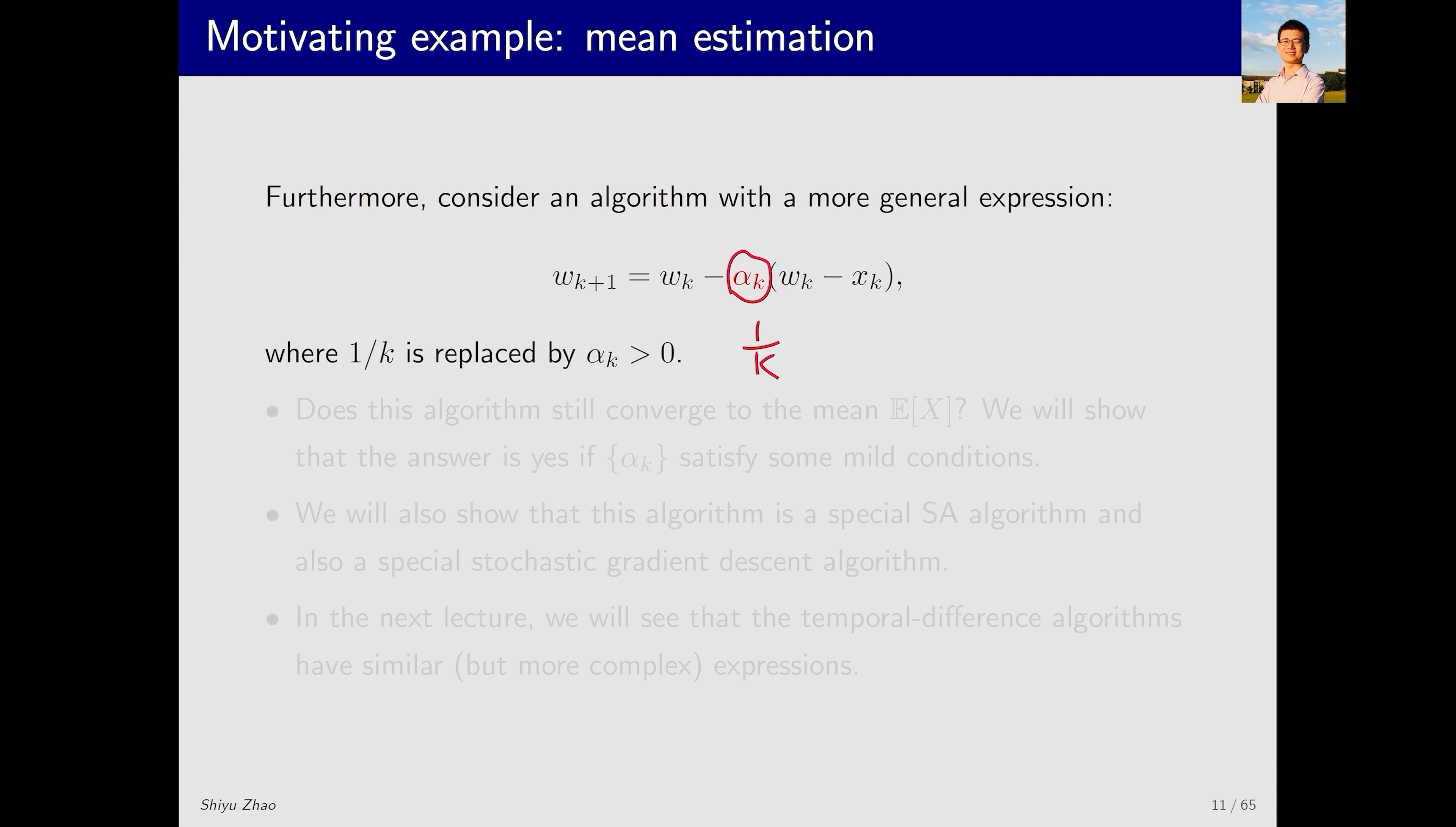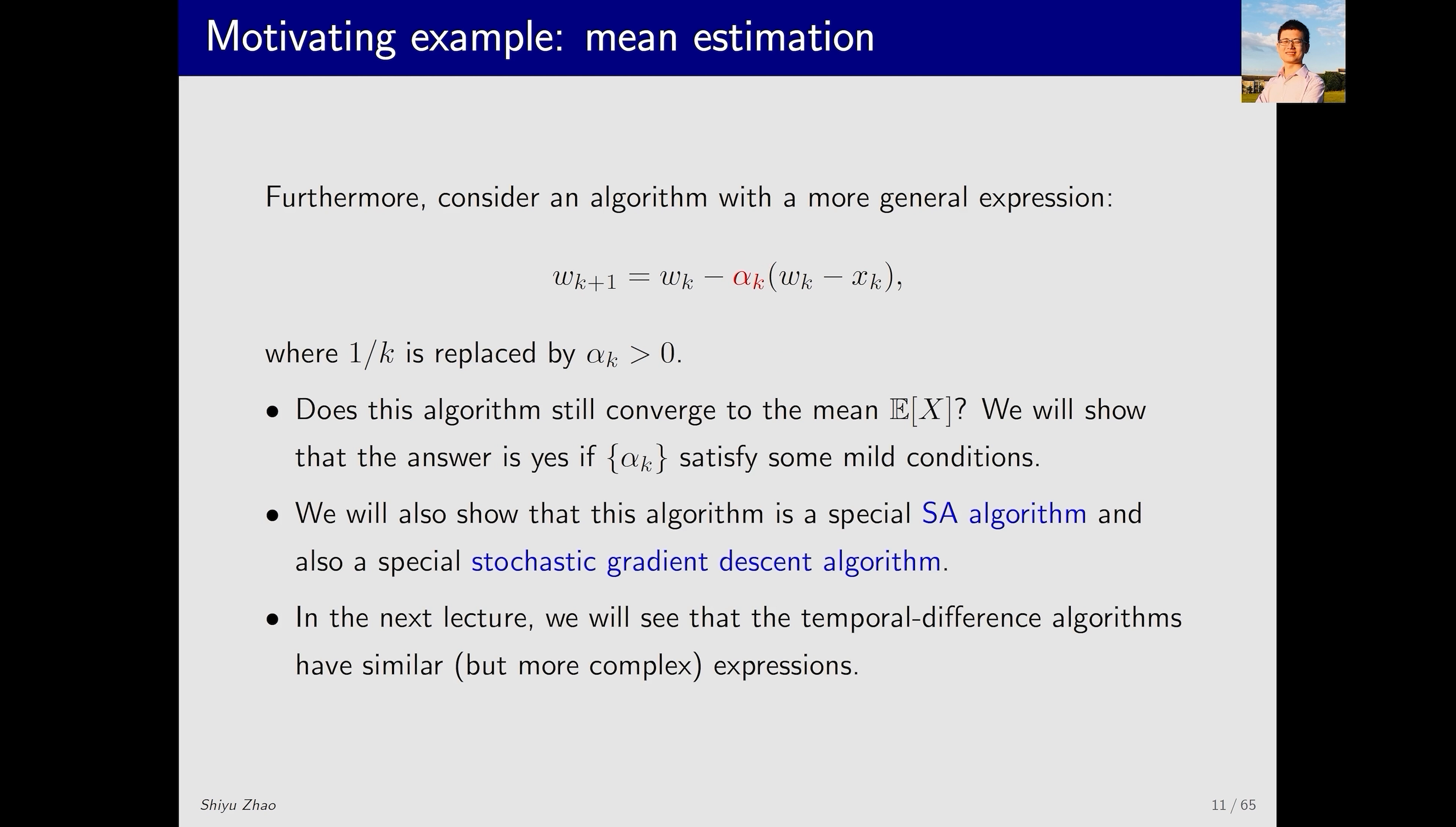However, if alpha_k is not 1 over k, then its explicit expression cannot be obtained. Can w_k still gradually converge to the mean E[X] in this case? The answer is yes. If alpha_k satisfies certain conditions, this algorithm will converge to E[X], which we will discuss in detail later.